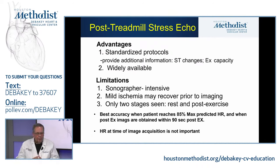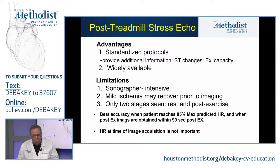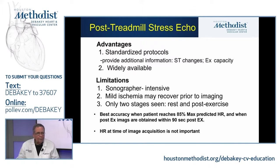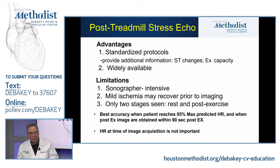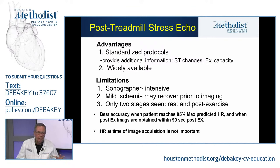Best accuracy with the treadmill technique is achieved when a patient reaches 85% of maximal predicted heart rate during exercise and when post-exercise images are obtained within 90 seconds. Importantly, the heart rate at the time of image capture doesn't matter — what counts is the peak heart rate the patient achieved during exercise, not what it has fallen to by the time images are being captured.